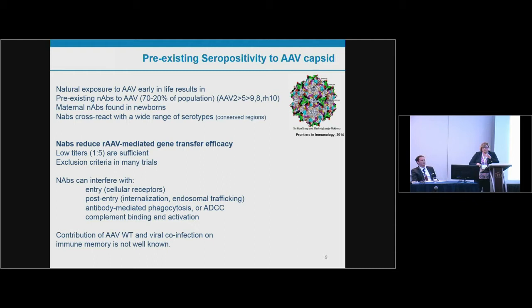Addressing seropositivity to the AAV capsid: natural exposure to AAV can occur in all of us, early in life, resulting in pre-existing neutralizing antibodies with different levels depending on the serotype. This can concern up to 70% of the population, including newborns, and these antibodies cross-react with a wide range of serotypes. Titers as low as 1 to 5 might prevent gene transfer, so seropositivity is used as an exclusion criterion in clinical trials.